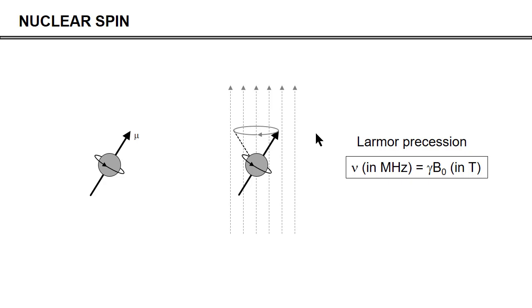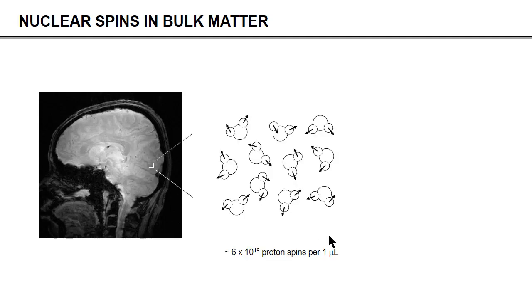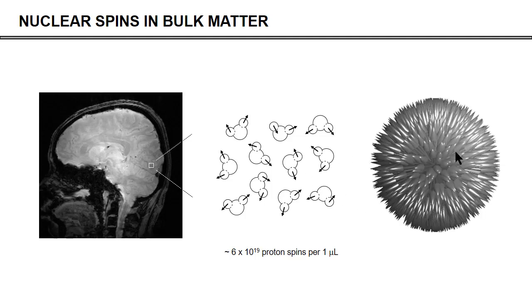We never look at individual spins — we always look at a large collection. In one microliter of human brain tissue, you might have as many as 10^19 proton spins, most residing in water molecules. If there is no external magnetic field, these nuclear spins are randomly oriented in any direction. If we place them on the origin of a Cartesian grid, we get a spin orientation sphere where all spins are in random orientations, and if you add them all together, you end up with nothing — no net macroscopic magnetization.